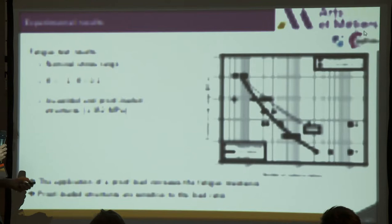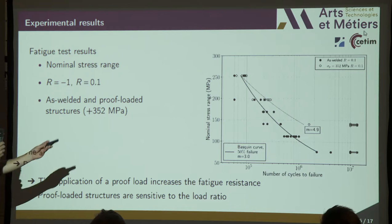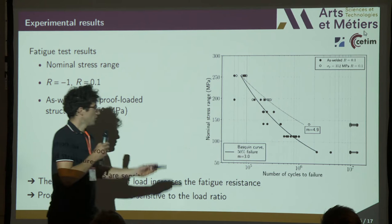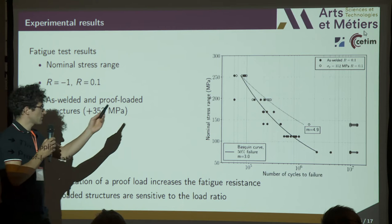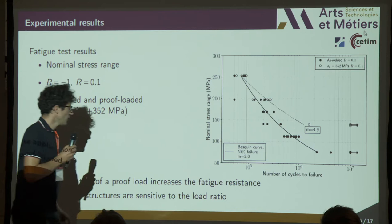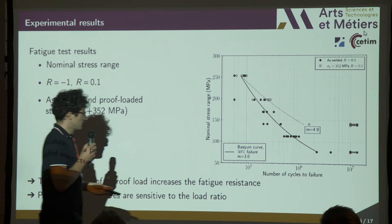I will now present the fatigue results. On the S-N curve, I give the nominal stress range according to the number of cycles to failure. On this graph, we can see as-welded structures tested with stress ratio R = 0.1 in full black, and proof-loaded structures subsequently tested with stress ratio R = 0.1 in empty black. We can see the beneficial influence of a proof load on fatigue resistance, and the effect is greater for low nominal stress range.